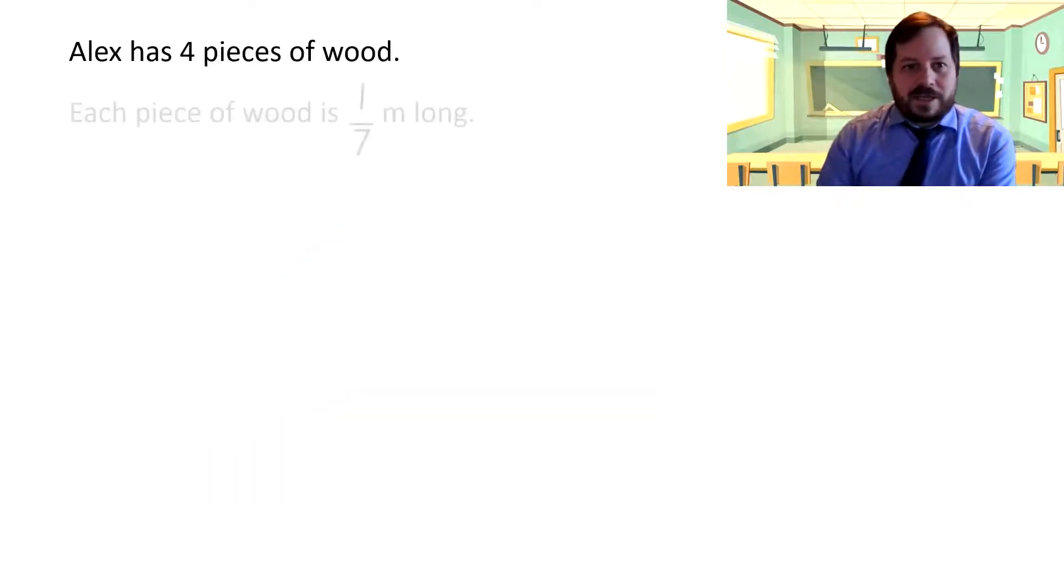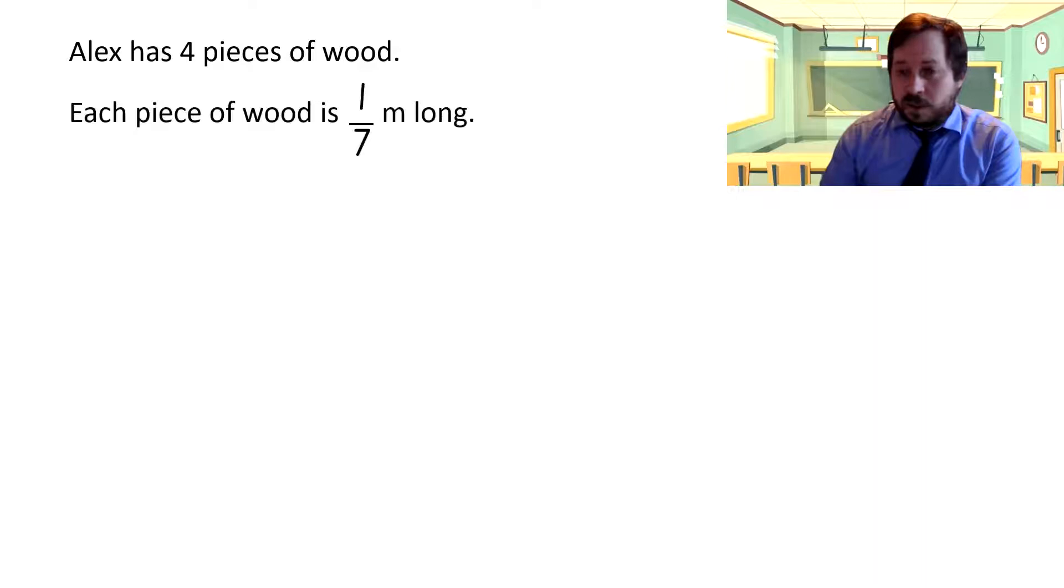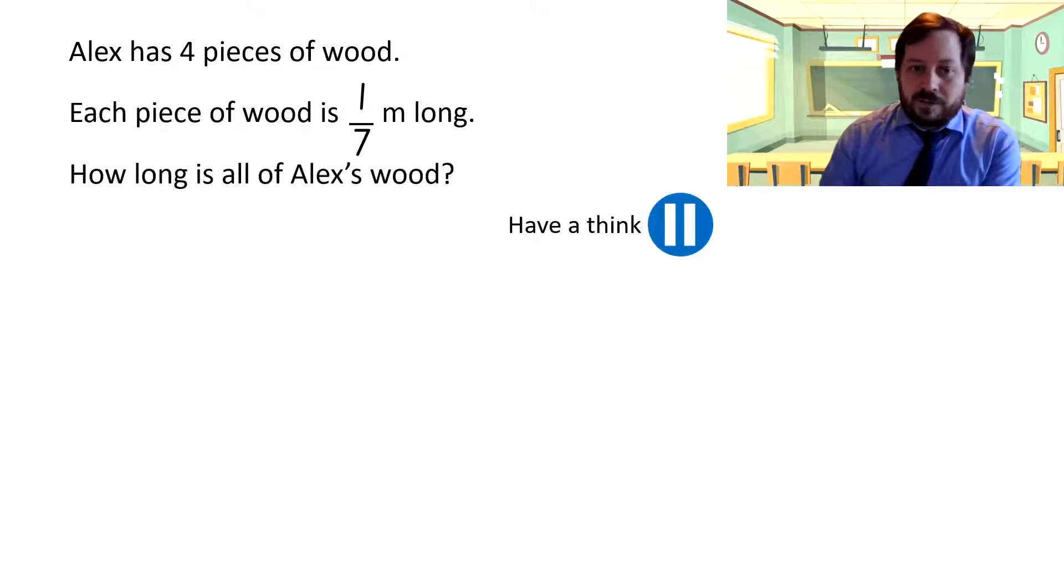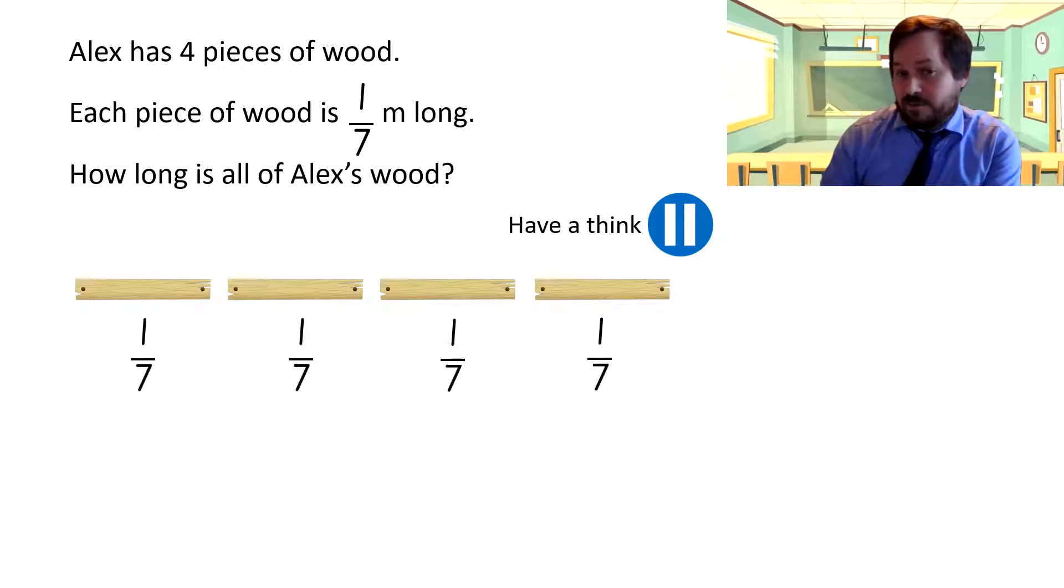So, Alex has four pieces of wood. Each piece of wood is one-seventh of a meter long. How long is all of Alex's wood? Have a think. See what you think. Well, here's his four pieces of wood. Each one being a seventh, one-seventh of a meter long. We add them all together.